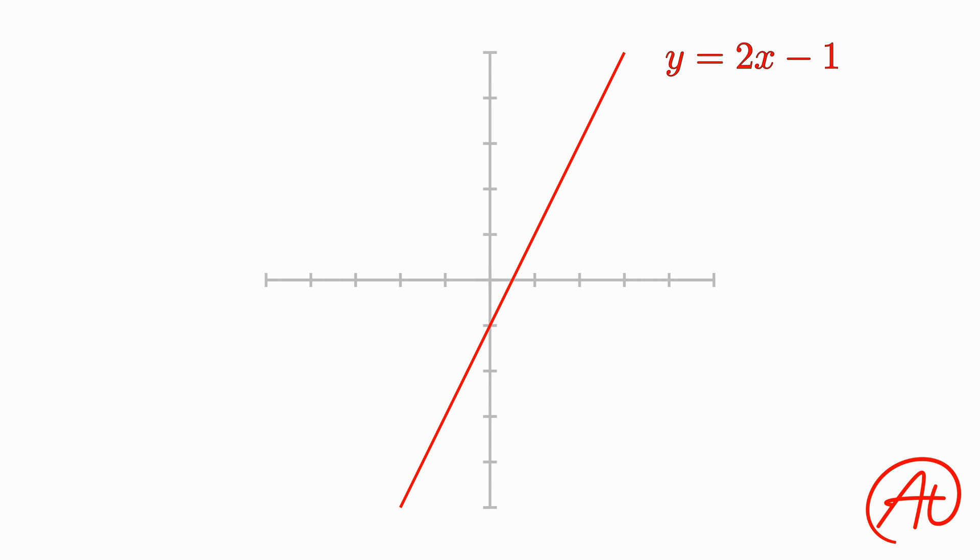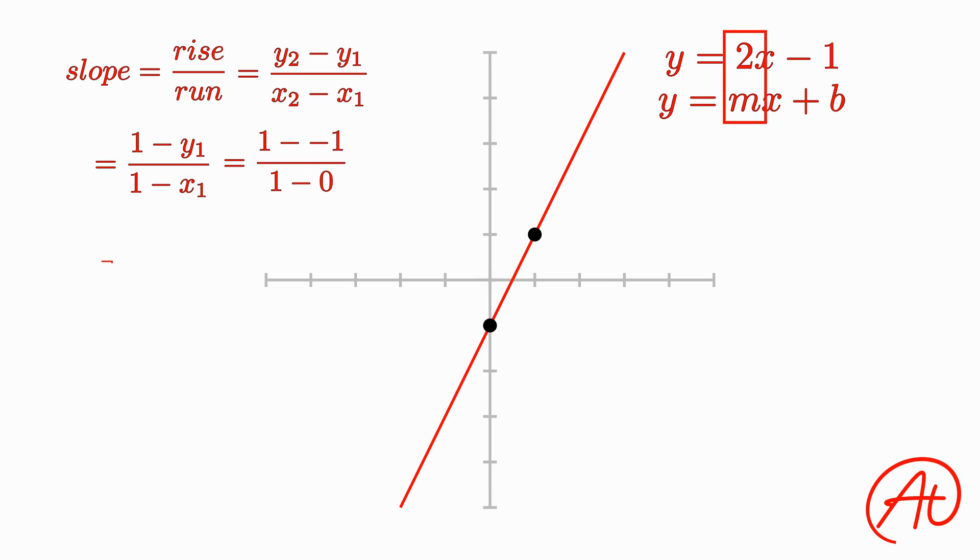Using your previous knowledge, you may notice that this equation is in the form y equals mx plus b, and in that case, you can easily see that the slope is equal to 2. If you didn't see that, you can always use the classic rise over run formula. For this line, plugging in these two points, 1, 1 and 0, negative 1, you would get that the slope of the line is also 2.